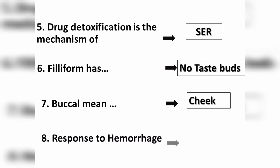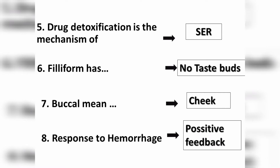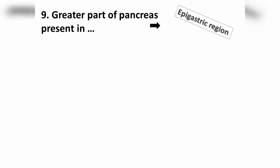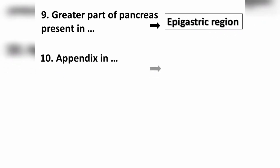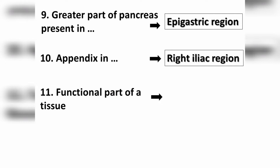Question number eight: response to humorous stimuli involves a positive feedback mechanism. Question number nine: the greater part of the pancreas is present in the epigastric region. Question number ten: the appendix is present in the right iliac region. Question number eleven: the functional part of a tissue is the parenchyma.